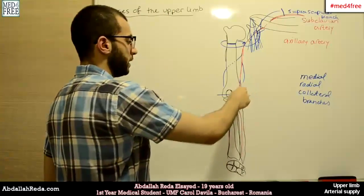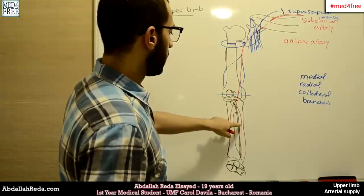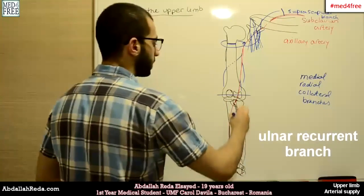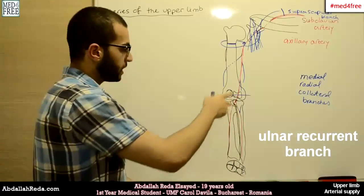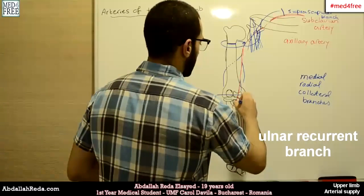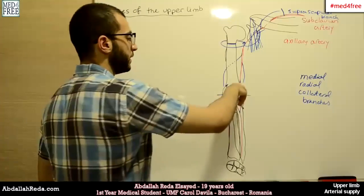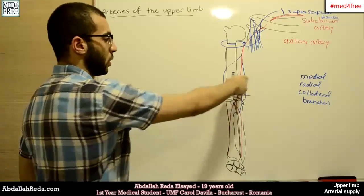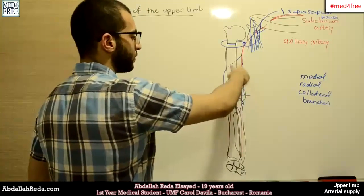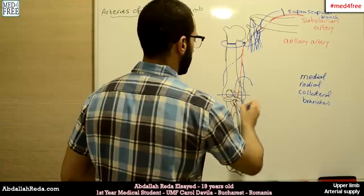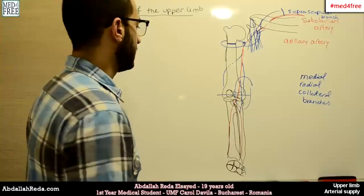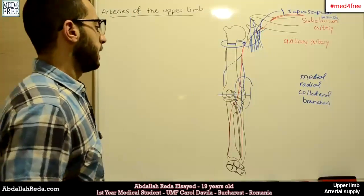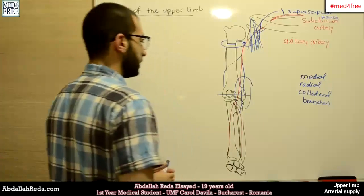The superior and inferior branches of the brachial artery will also anastomose with branches of the ulnar artery because they are on that side. For the ulnar artery, it will give a branch that divides into two collateral branches. One will anastomose anteriorly with the inferior branch, and the posterior one will anastomose behind the medial epicondyle of the humerus with the superior branch of the brachial artery. This forms a network in the area of the elbow, participating in the arterial network that supplies the elbow.